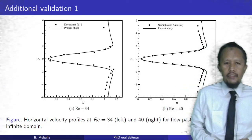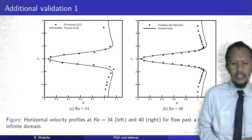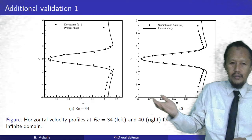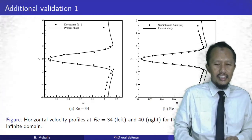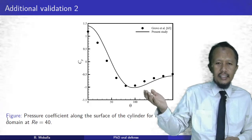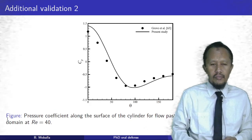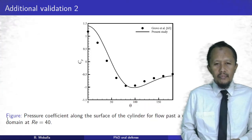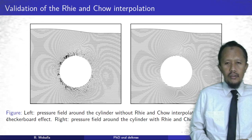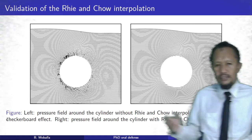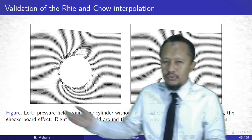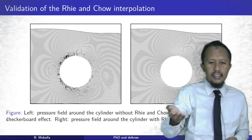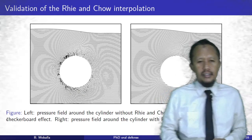We also validate against flow past a circular cylinder in an infinite domain — additional validation required by the reviewer in the journal GFS. We validate the pressure coefficient for flow past a circular cylinder in an infinite domain at Reynolds number 14. This also shows a comparison of the pressure contour without and with Rhie-Chow interpolation: the zigzag pattern disappears when we apply the Rhie-Chow interpolation.